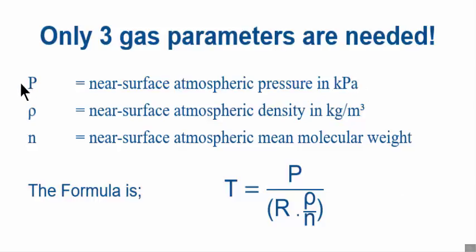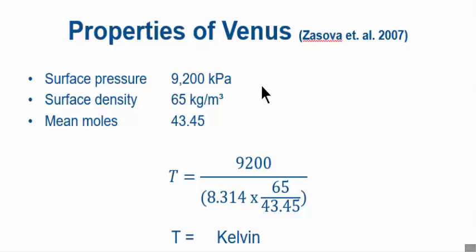Three gas parameters are needed: near-surface atmospheric pressure in kPa, near-surface atmospheric density in kilograms per cubic meter, near-surface atmospheric mean molecular weight. Stick them into this equation, you've got the near-surface atmospheric temperature. That's how simple it is. Let's stick in the three parameters for Venus: surface pressure is 9200 kPa, surface density of Venus 65 kilograms per cubic meter, mean molecular weight is 43.45, as you'd expect because it's nearly all CO2 and CO2 is 44, so just a little bit of nitrogen brings it down to 43.45. Work that out—what do you get? You calculate it, let me know, tell me how accurate it is.